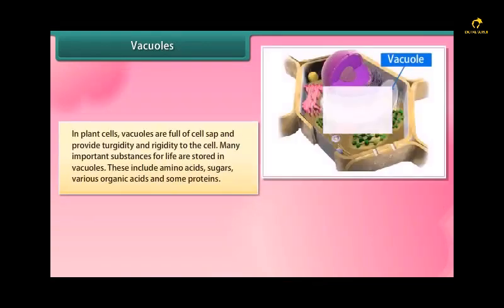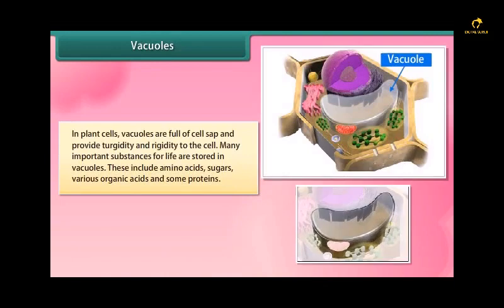In plant cells, vacuoles are full of cell sap and provide turgidity and rigidity to the cell. Many important substances for life are stored in vacuoles. These include amino acids, sugars, various organic acids and some proteins.